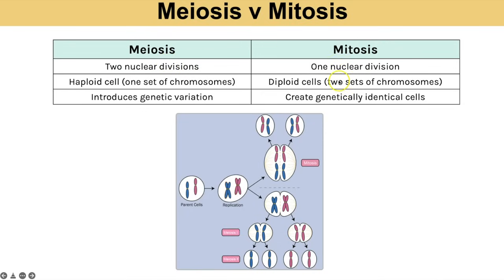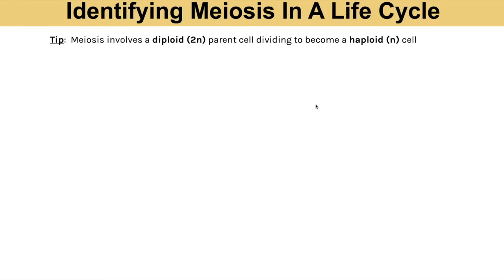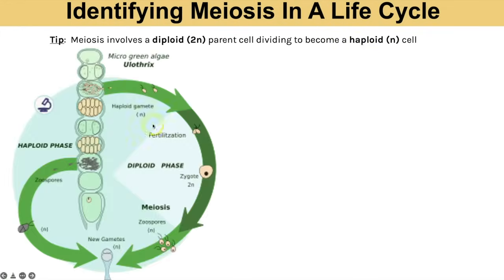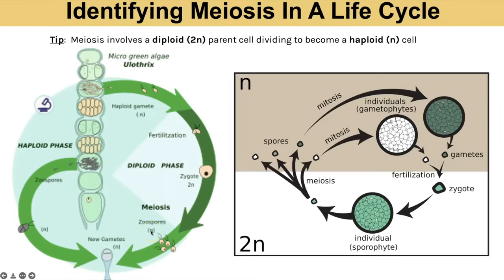Comparing meiosis and mitosis: meiosis involves two nuclear divisions whereas mitosis is only one, which is why meiosis results in haploid cells whereas mitosis produces diploid cells. Meiosis introduces genetic variation through crossing over and independent segregation, whereas mitosis creates genetically identical cells. You could be asked to identify meiosis in an unfamiliar life cycle — look for where diploid (2n) cells divide to create haploid (n) cells. It won't always be gametes; for example a zygote (2n) making zoospores (n) would indicate the meiosis stage.